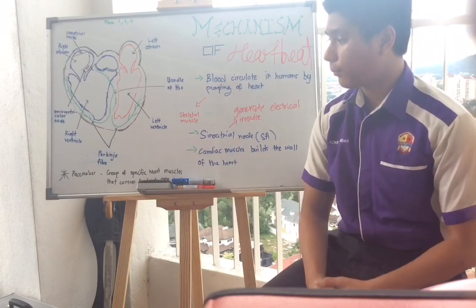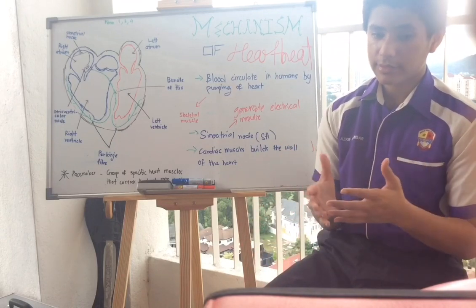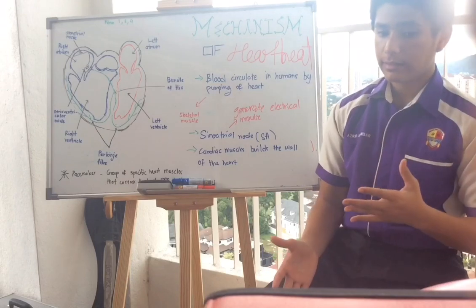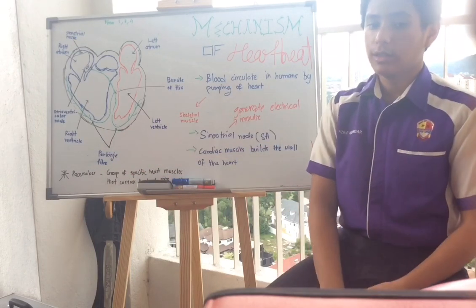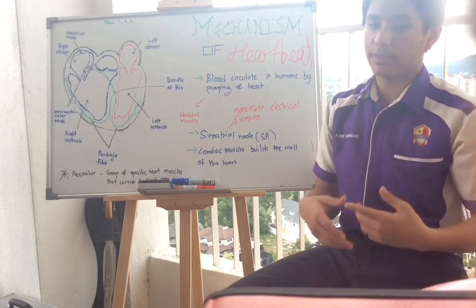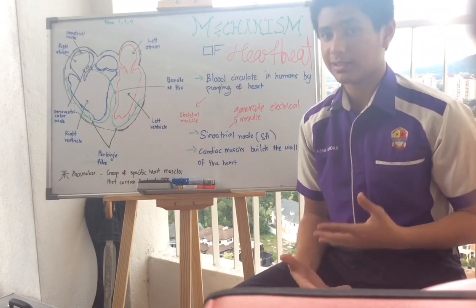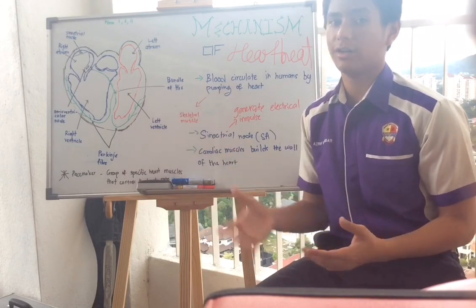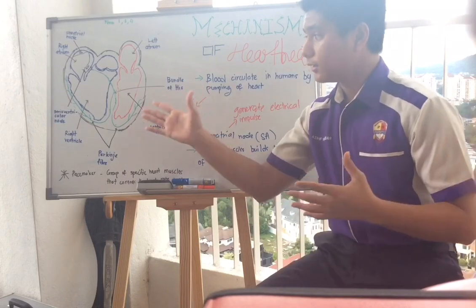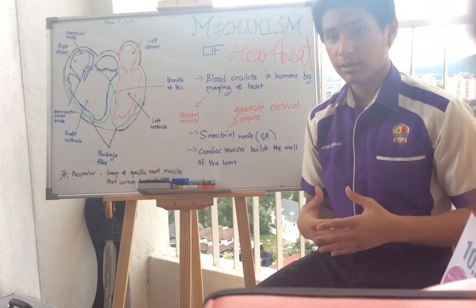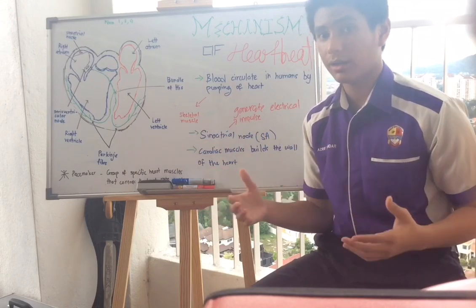The bundle of His has two branches, and from there the signal travels to the Purkinje fibers. The Purkinje fibers carry the impulse to the apex — the bottom tip — of the heart, and then the electrical impulse spreads from the apex upward through the entire ventricle wall. Think of the Purkinje fibers like hands hugging a pillow: they contract around the ventricle walls so that blood from the ventricle is pumped out.